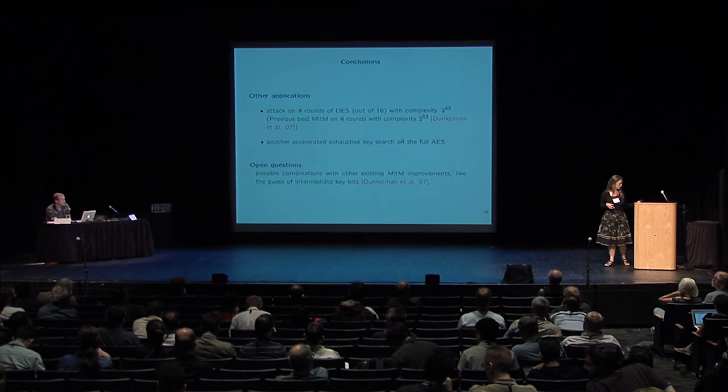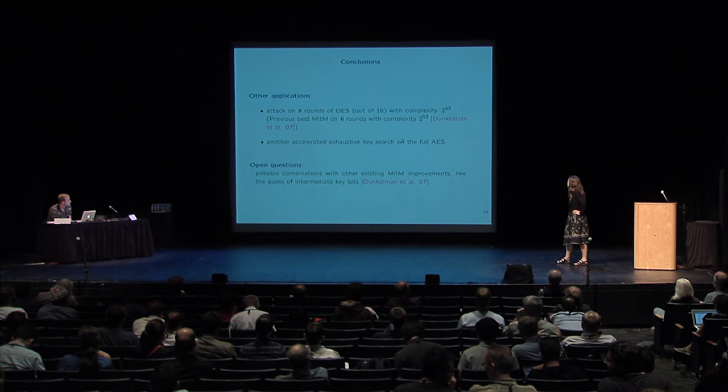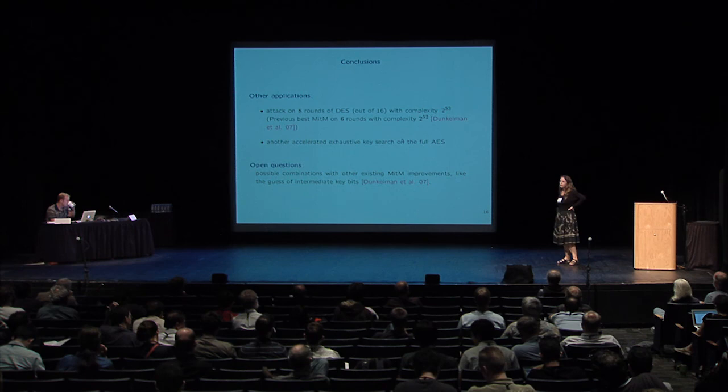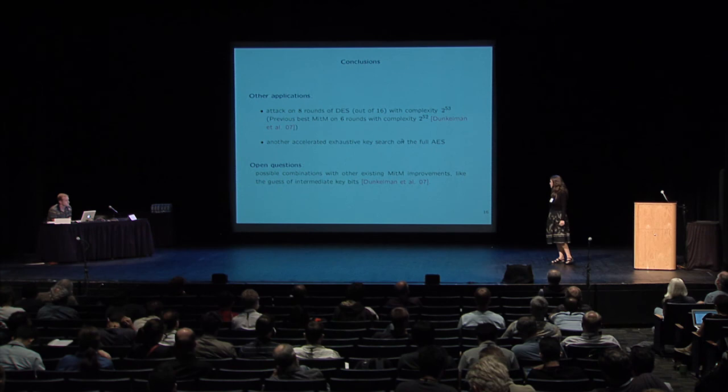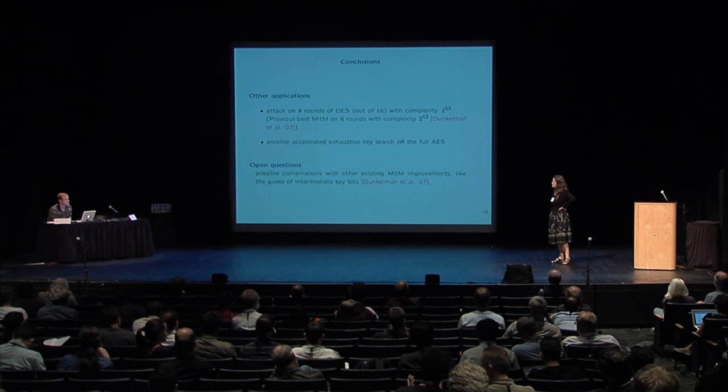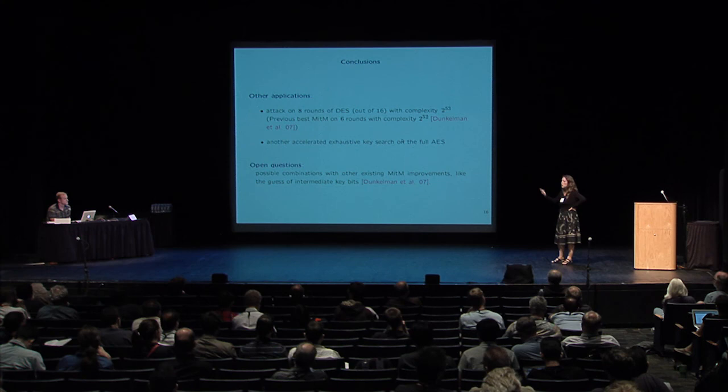Question: Have you looked at other ciphers beyond PRINCE and DES? For instance, for the large variety of lightweight ciphers, most of them have a very large number of rounds, so for those kinds of ciphers, meet-in-the-middle attacks and even these improvements don't really make sense. What we usually gain compared to meet-in-the-middle attacks is that we can add two or three rounds, but not really more.